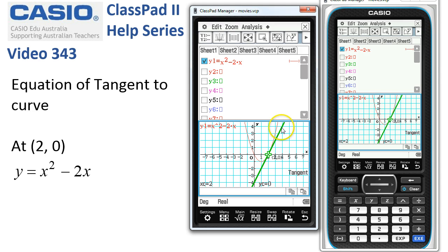Now to actually get the equation of the tangent, we now need to confirm that that's the spot by tapping the execute button here. ClassPad calculates the equation of the tangent and says there it is. Y is equal to 2x take 4.